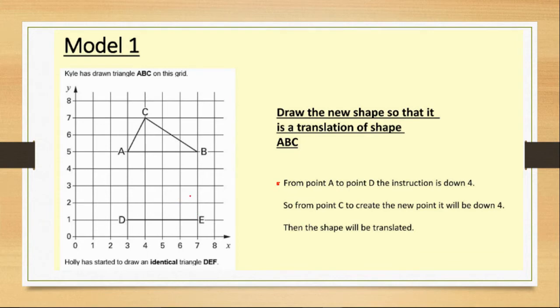What we need to do now, we need to look at the second instruction. So from the point C to create the new point, it will also be 4 down because this whole shape is moving 4 down. So if we look at C, if we go 1, 2, 3, 4, that will make our new point, which we're going to call F. Well, that is a translation of there. But we need to do one more thing before we do that. Does anyone know what it is? Yeah, we need to join the lines up.